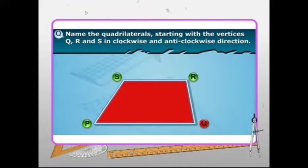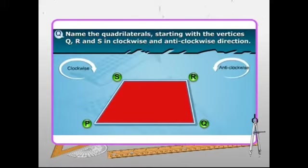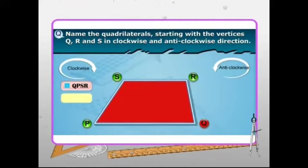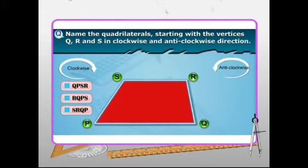Check out this figure, it's a quadrilateral. Let's try to name this quadrilateral starting with the vertices Q, R, and S in clockwise and anti-clockwise direction. In the clockwise direction, the given quadrilateral can be named as QPSR, RQPS, and SRQP.